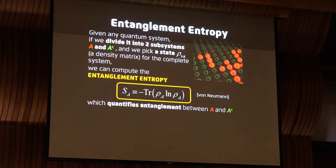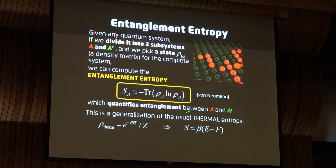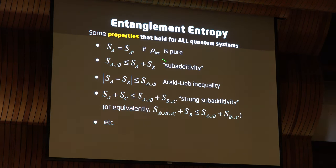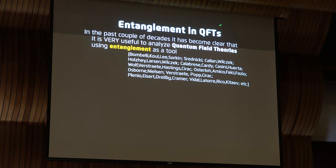The larger the entanglement entropy, the more entanglement there is between the two sets of degrees of freedom. It's called entropy partly because it's a generalization of thermal entropy — if one plugs in a thermal density matrix, this reduces to the usual notion of thermal entropy. More generally, it is entropy in the modern sense of information. This quantity has been proven rigorously to satisfy a large list of properties for any quantum system, which is quite impressive. The quantum systems of interest to us are field theories.